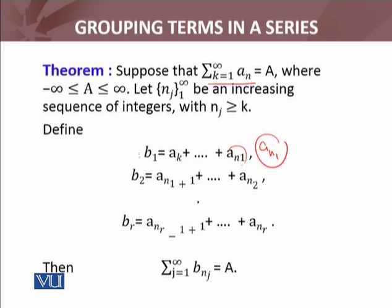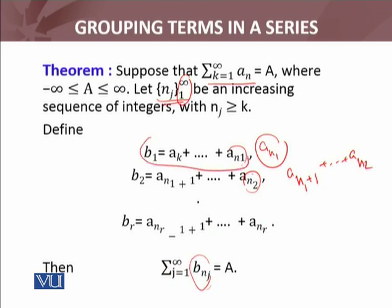So b_1 equals the sum from a_k to a_{n_1}. Then b_2 consists of the terms from a_{n_1 + 1} up to a_{n_2} — ये हमने दूसरा group बना लिया। n_1 और n_2 इस increasing sequence में से हैं। Similarly b_r is formed for each n_r. इस तरह हम groups बनाते गए और हमने new series construct कर ली by grouping। Then summation j equals 1 to infinity of b_{n_j} — j equals 1 होगा तो ये पहला group है, j equals 2 होगा तो ये दूसरा group है — this new series is also convergent and converges to the same sum a.